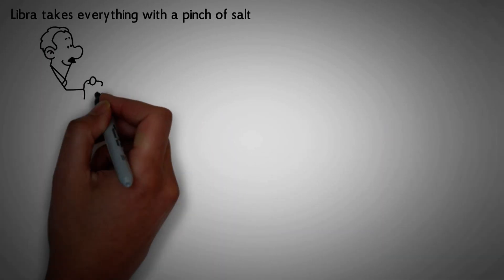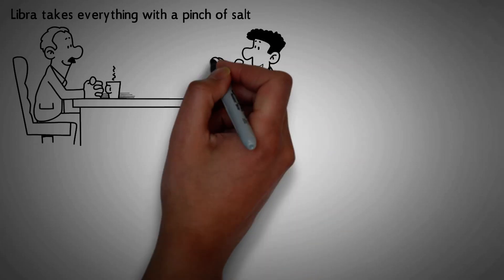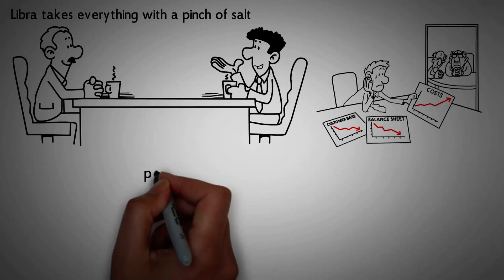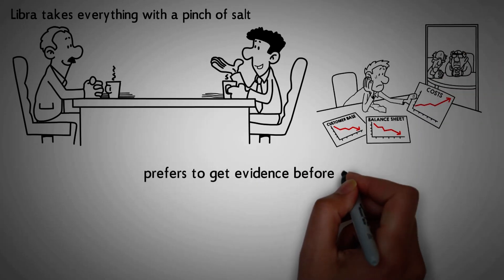Number 5. Libra takes everything with a pinch of salt. Libra doesn't believe in hearsay. They analyze situations critically to make objective conclusions. They believe in first-hand information from their own analysis and prefer to get evidence before coming to a conclusion.